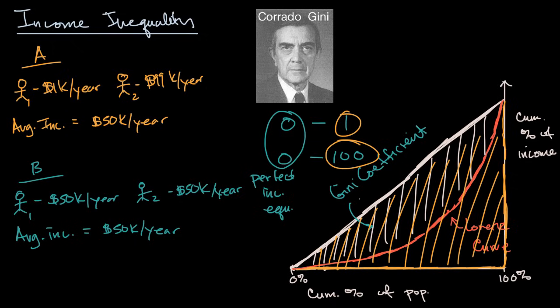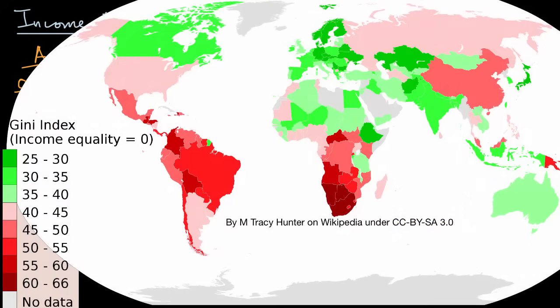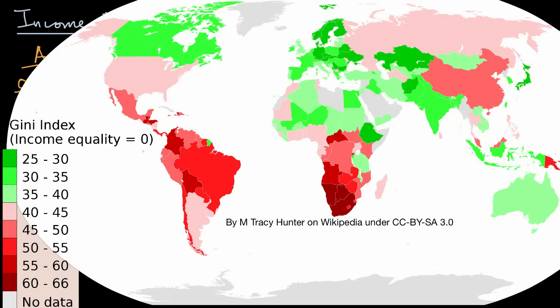An interesting thing to do is look at Gini coefficients for various countries and compare them, which is exactly what's shown on this map. Countries shaded red have high Gini coefficients, meaning more income inequality. Countries shaded green have relatively low Gini indices or Gini coefficients, which is indicative of reasonably low income inequality.